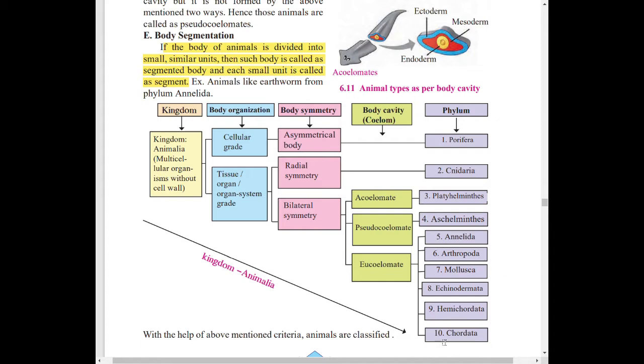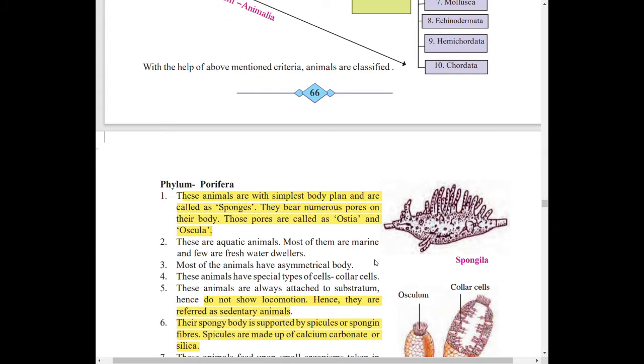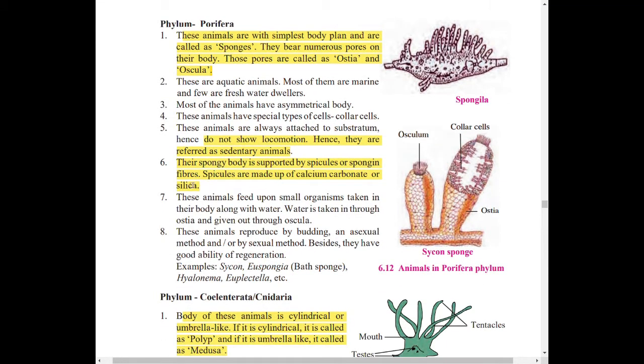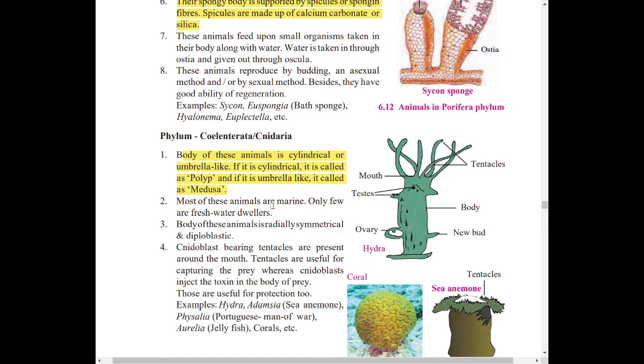Coming on to the phyla. Whatever important points are there in each phylum are already highlighted. Spicules are made up of calcium carbonate and silica, so remember this point. For Cnidaria, remember the terms polyp and medusa.